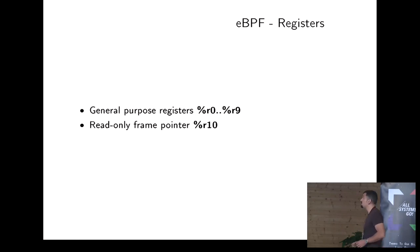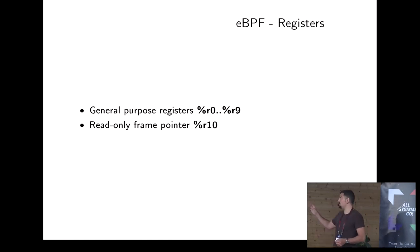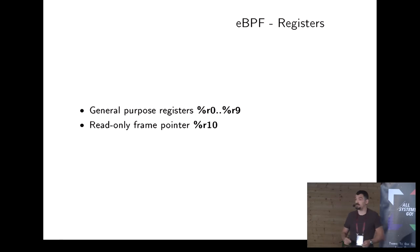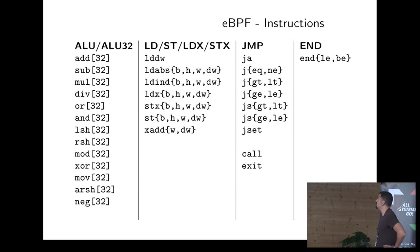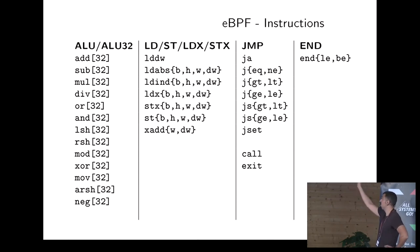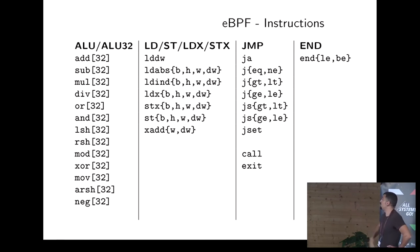It has registers which are 64 bits — all general-purpose registers, but one, which is a frame pointer and is read-only. This is the instruction set; it's divided by different classes of instructions. It's pretty straightforward, small and simple.